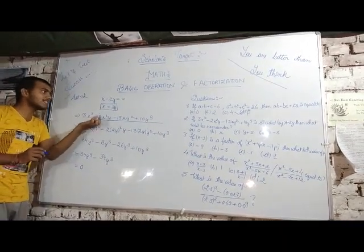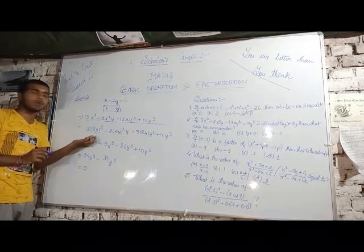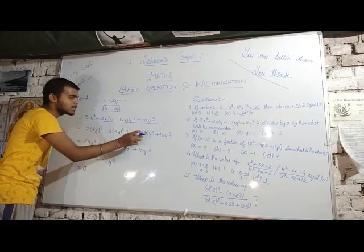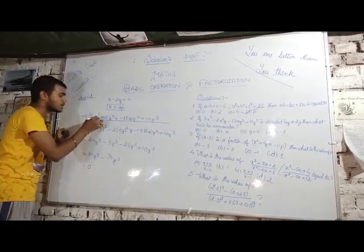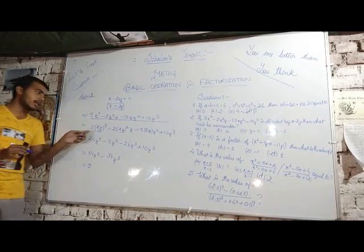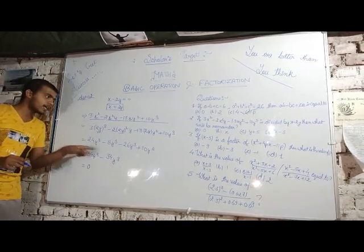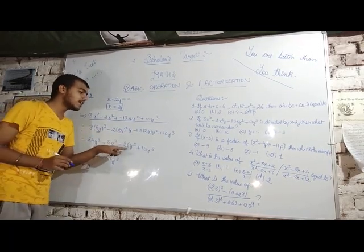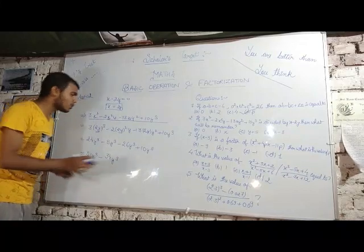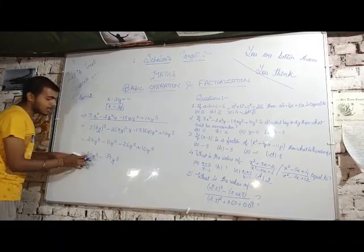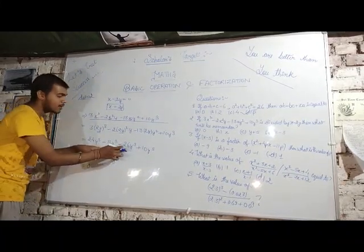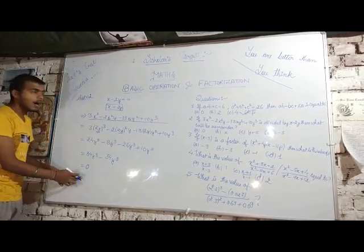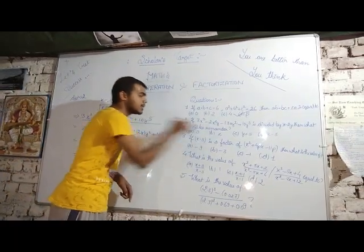I put x = 2y wherever x appeared. Now just see: 3×(2y)³ = 3×8y³ = 24y³. Then -2×(2y)²×y = -2×4y²×y = -8y³. Then -13×(2y)×y² = -26y³. Plus 10y³. So: 24y³ - 8y³ - 26y³ + 10y³ = 0. The remainder is 0.